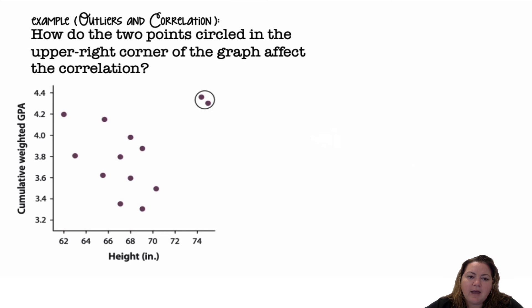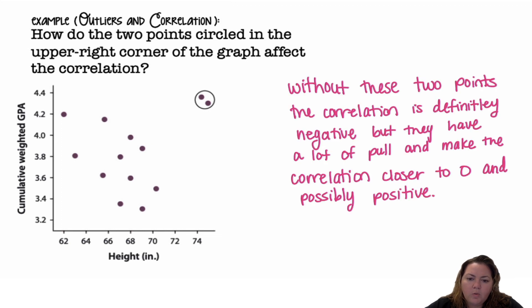Outliers. How did the two points circled in the upper right corner of the graph affect the correlation? Well, if we didn't have those points, the correlation would definitely be negative. But because it's further on the x-axis, it has a lot more pull. It's able to have more leverage on the line of best fit, and so it's pulling the correlation closer to 0 and even possibly positive.